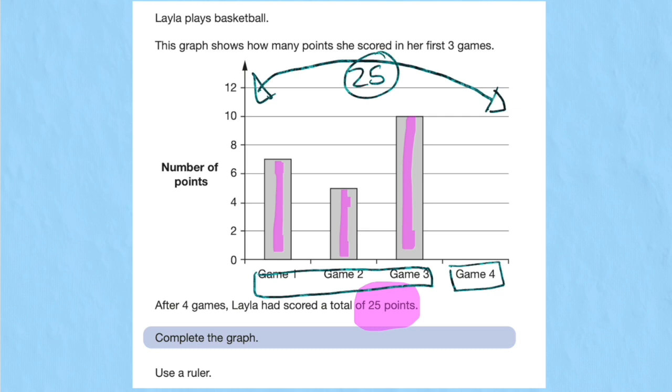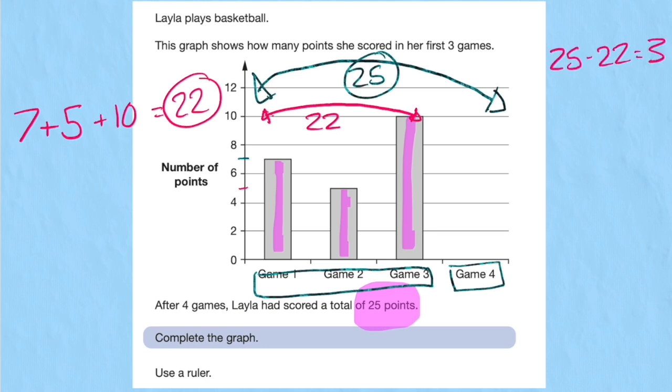We have the first graph goes somewhere here between six and eight, so it must be seven. Second graph goes somewhere between the four and six, so it must be five. And the third game goes all the way to ten, so it must be ten. So I have seven plus five, which is 12, plus ten, equals 22. So the value of these games here is 22. But we know the total is 25, so I can simply do 25, subtract my 22, equals three, to learn how many points she scored in game four.